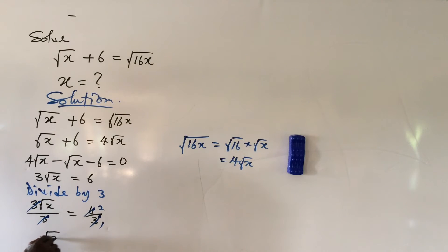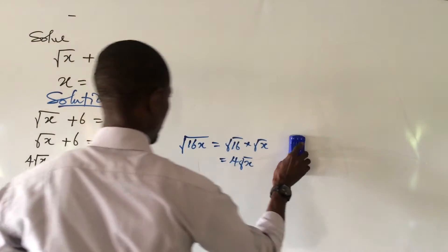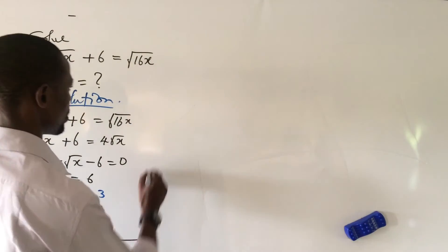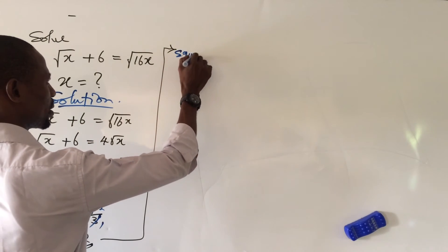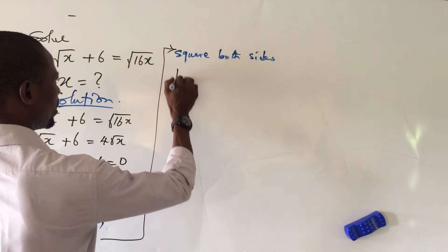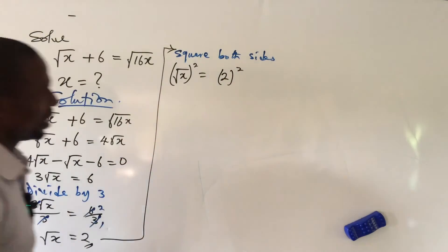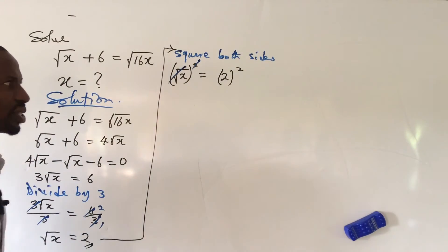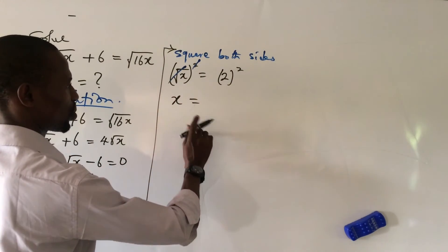Okay, so we're not looking for root x, we are looking for just x. So what do we do? Let's square both sides. So if we square both sides, we're going to have square root of x all squared equals 2 all squared. And as you know, this square power will take care of this square root, and so this guy will now be exposed. And I have here x equals 2 to the power of 2, which will give us 4.